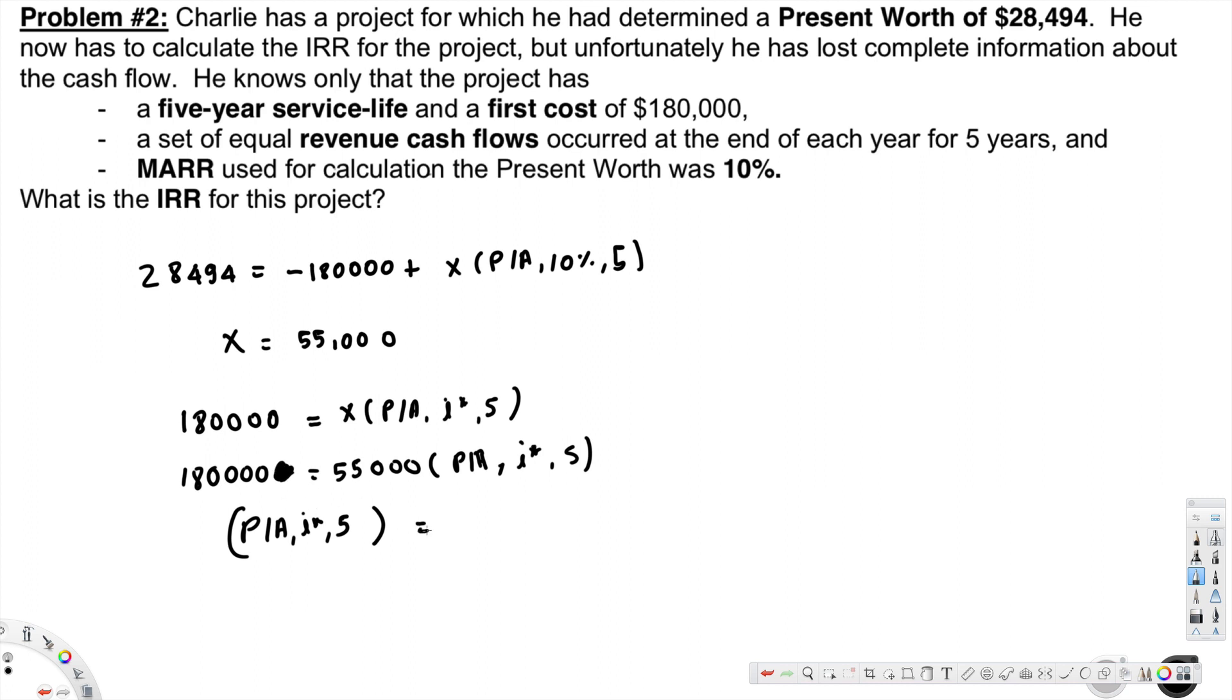If you solve for this, (P/A, i*, 5) is going to give us 180,000 divided by 55,000, that is equal to 3.273. Now to find i*, we have to look at the values in the table that are close to 3.273.